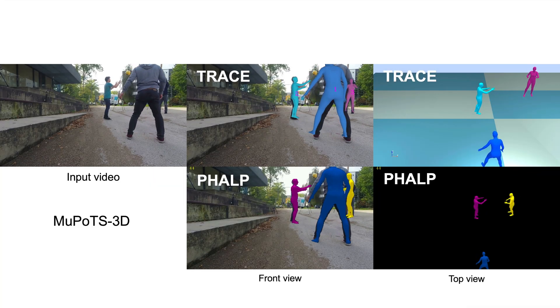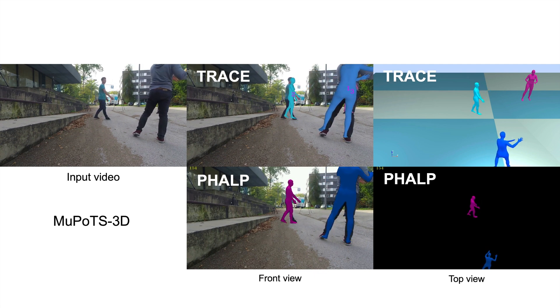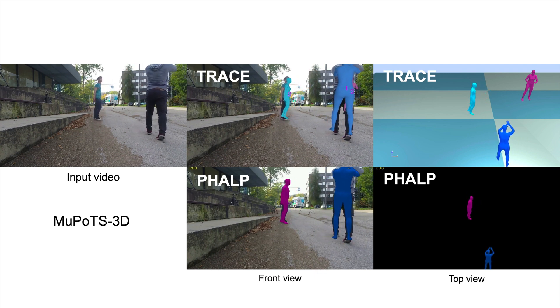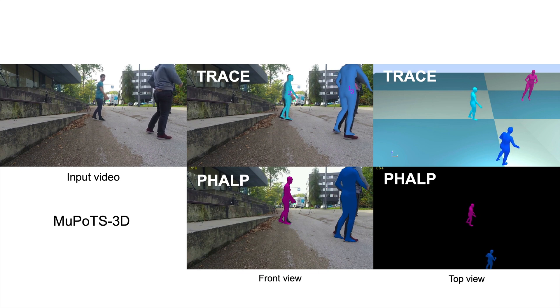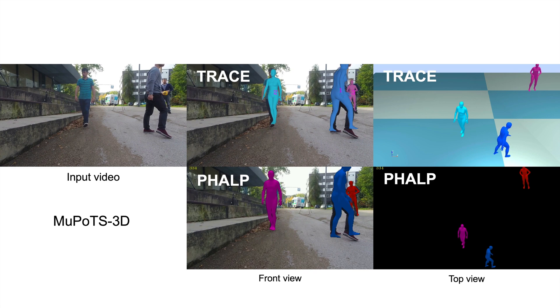Under long occlusions, PAP identifies people as new people when they reappear. This is illustrated by the change in color of the person. Note how TRACE maintains persistent tracks through long occlusions.